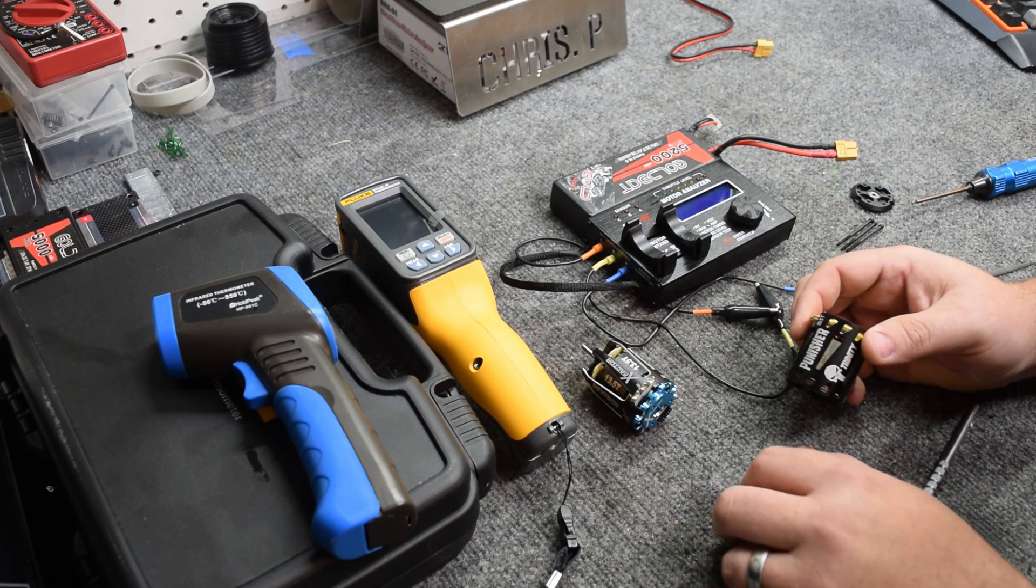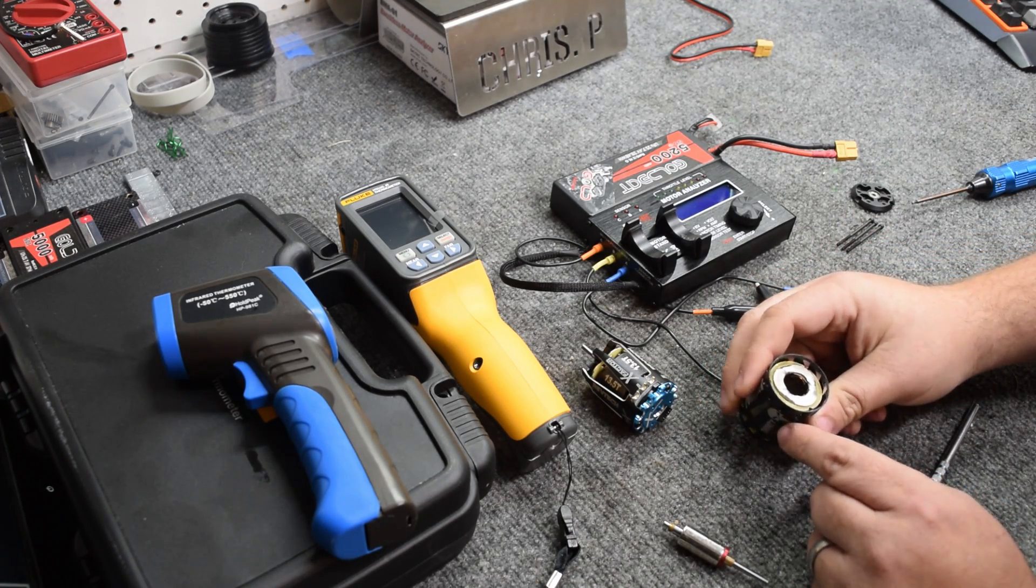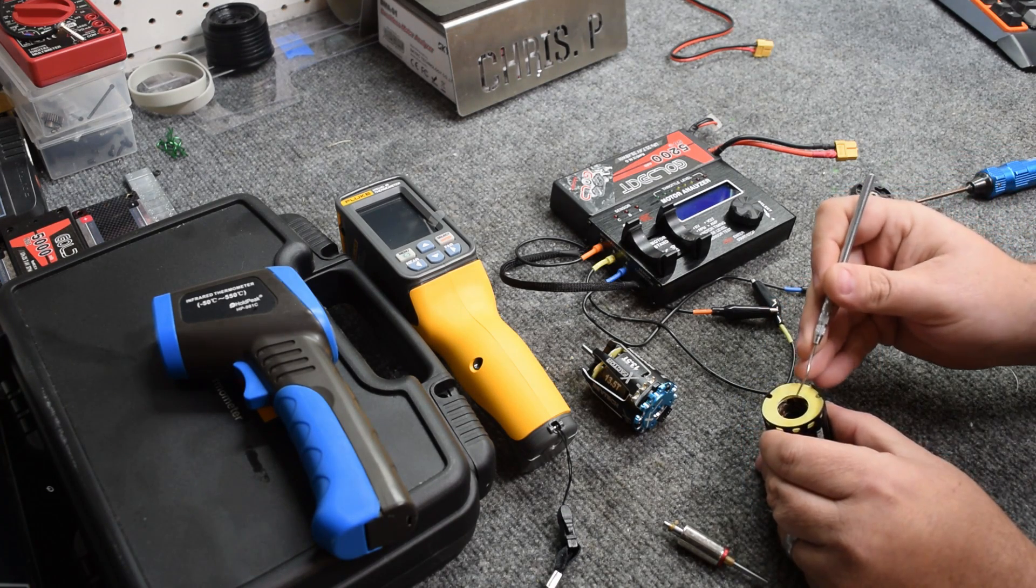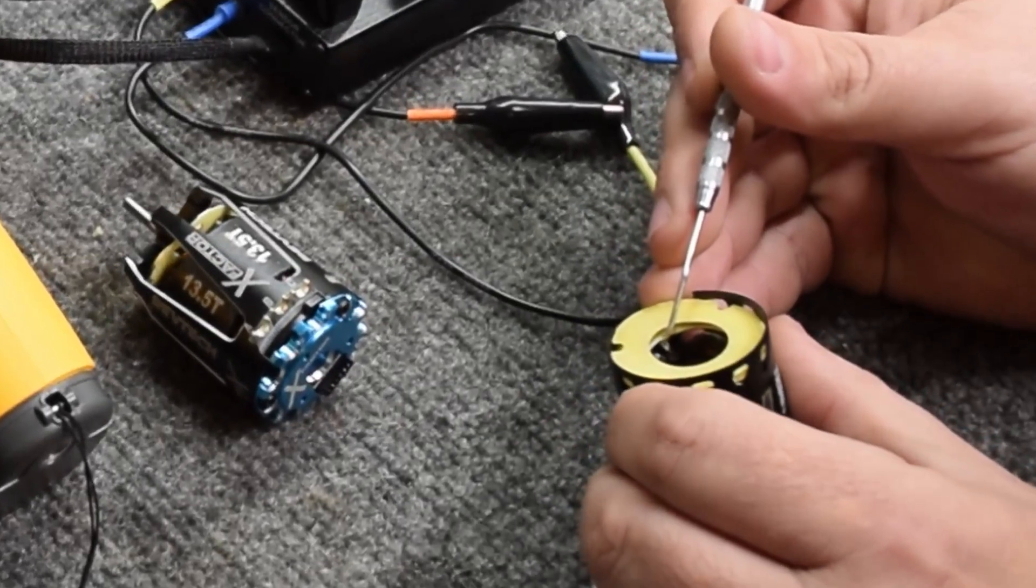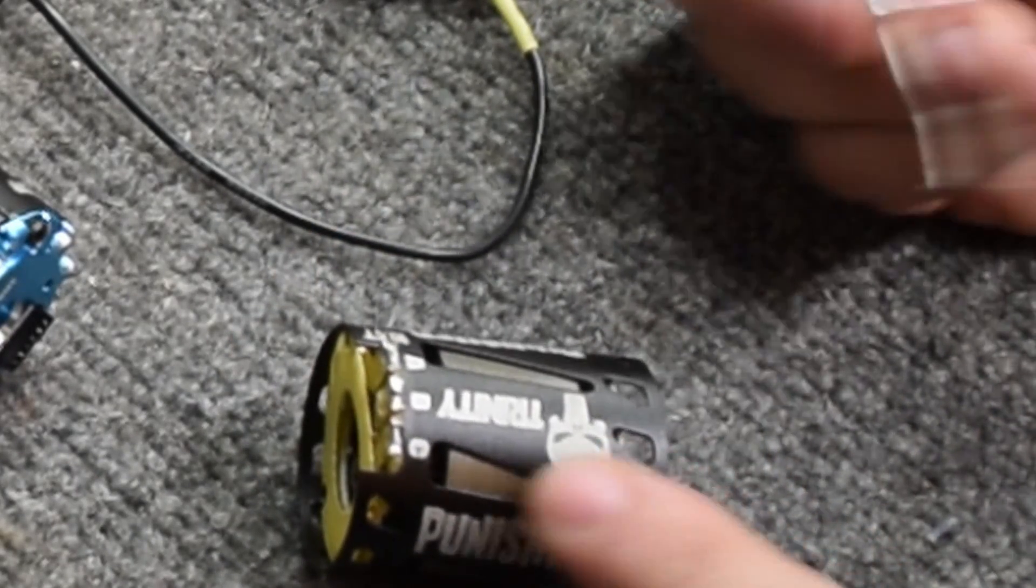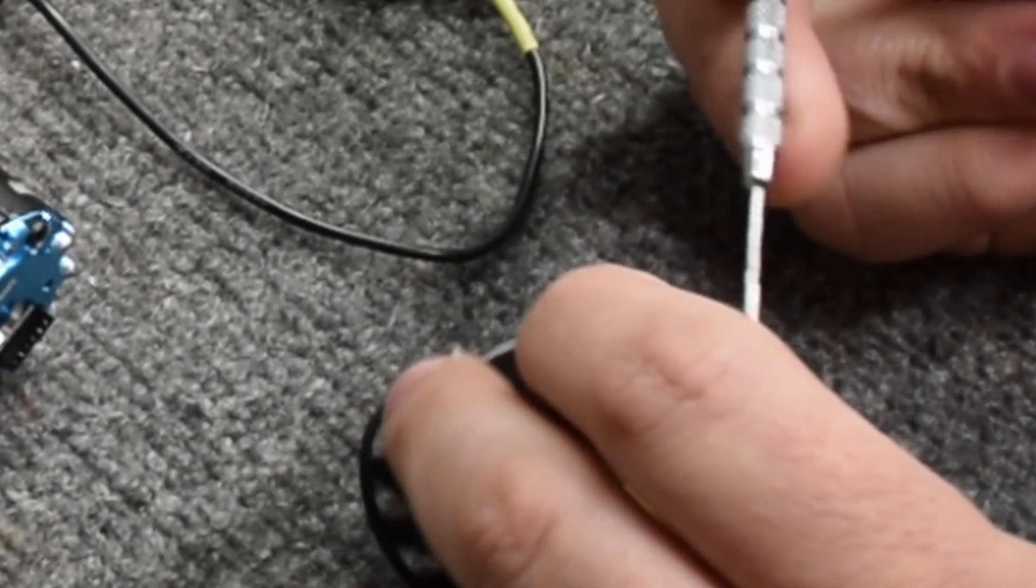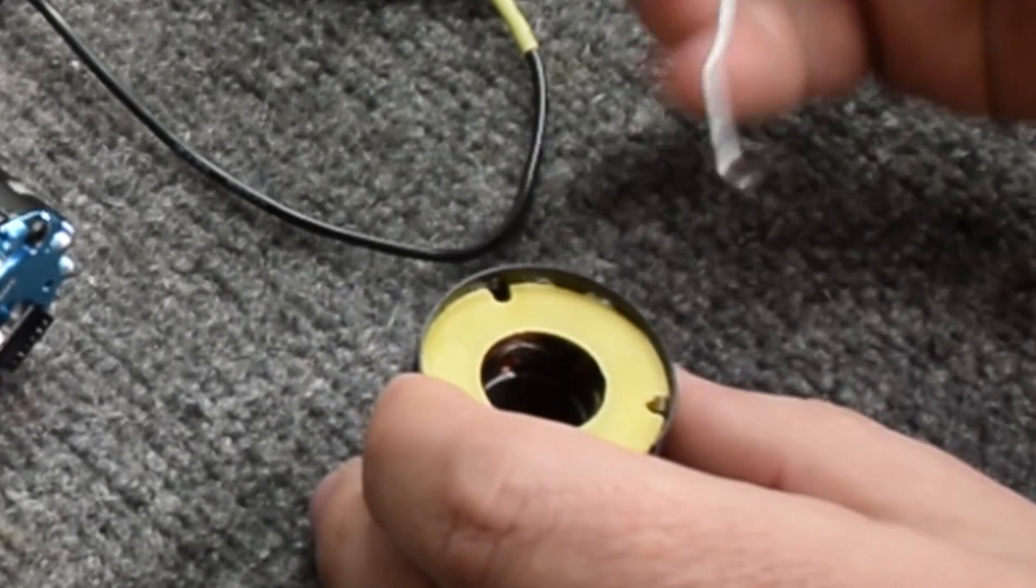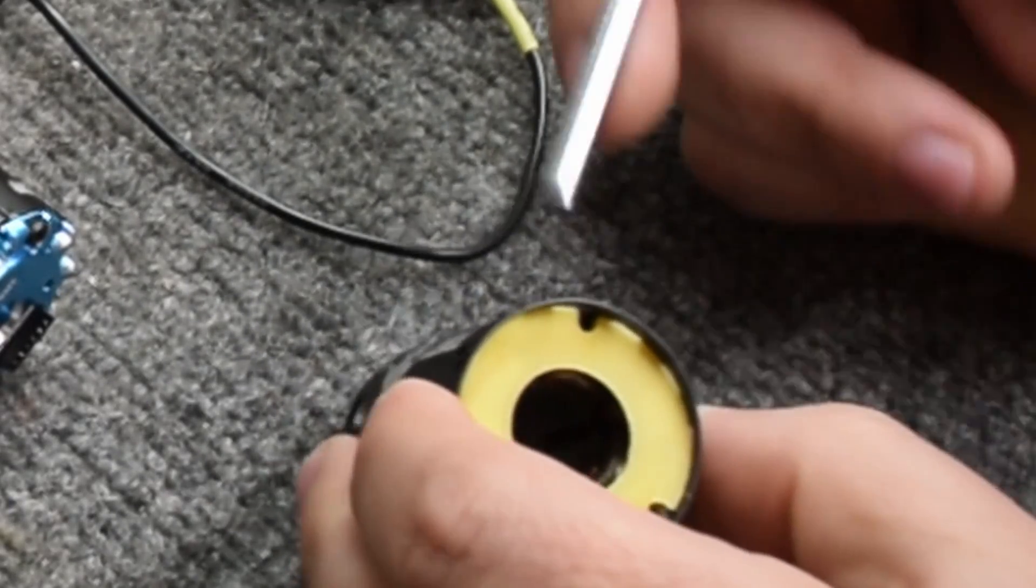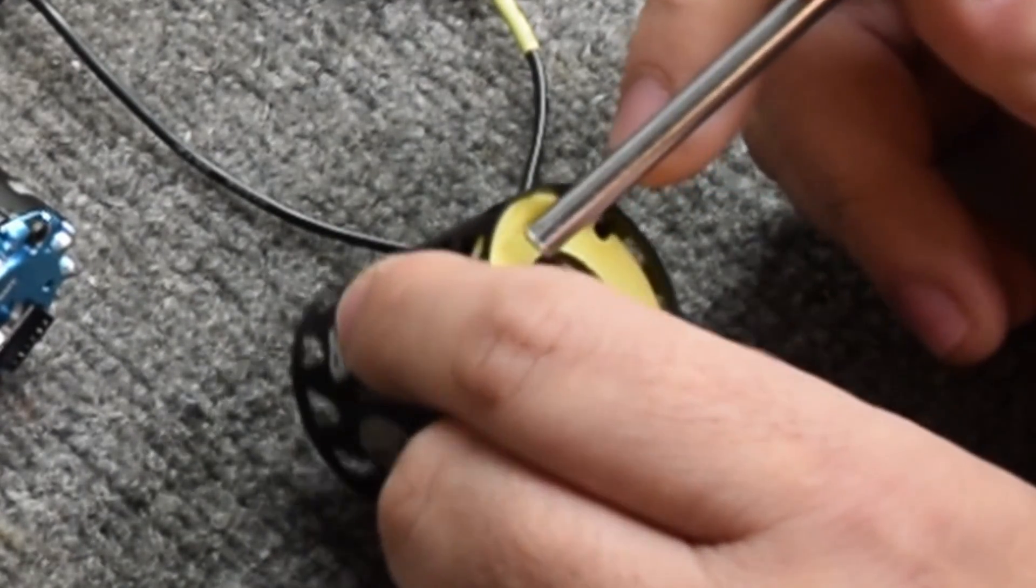So that is your sensor board. Now when it comes to how your motors are built, your cans, this is a bad example because it's so closed up, but inside here is copper windings. Those copper windings actually represent the turns of the motor. So in this case, this is a 10.5, so it is 10.5 revolutions of copper per pole that is on your motor. That's how they generate your turns per motor.